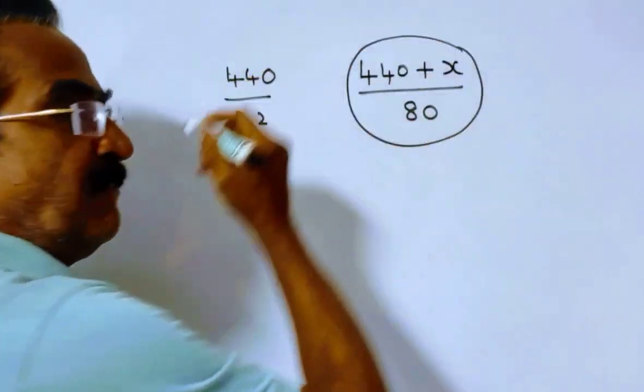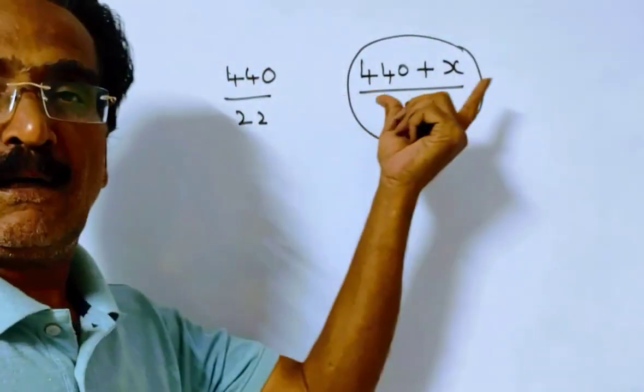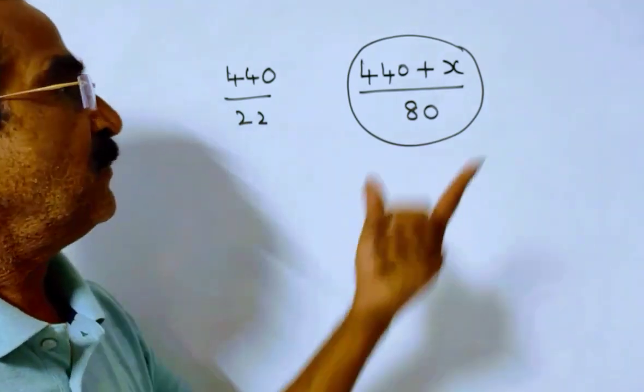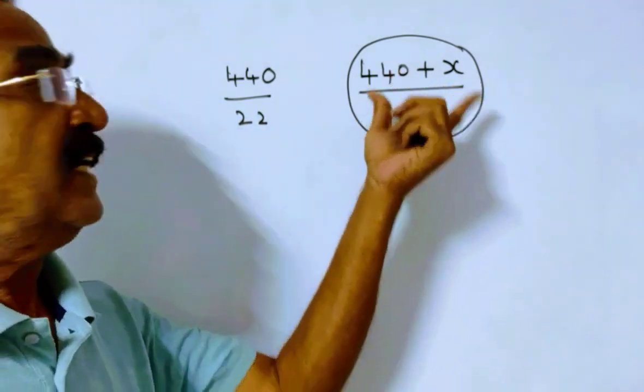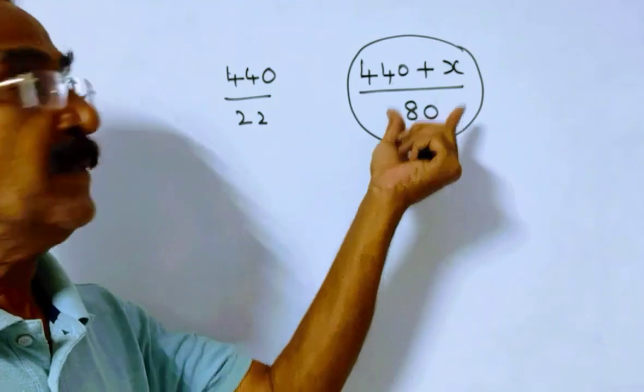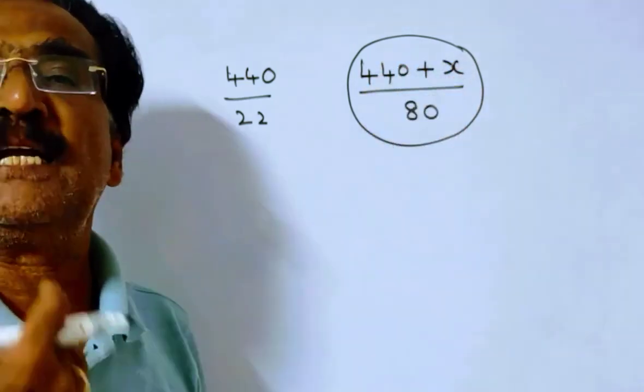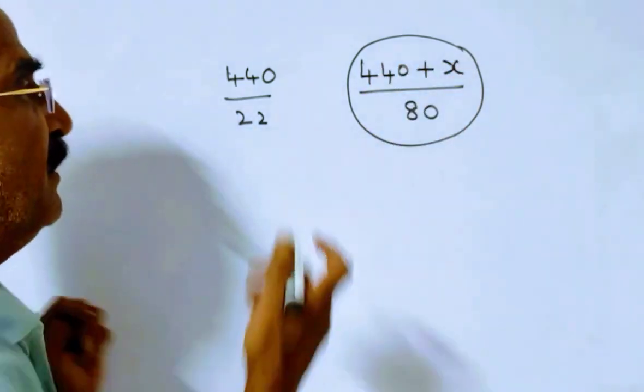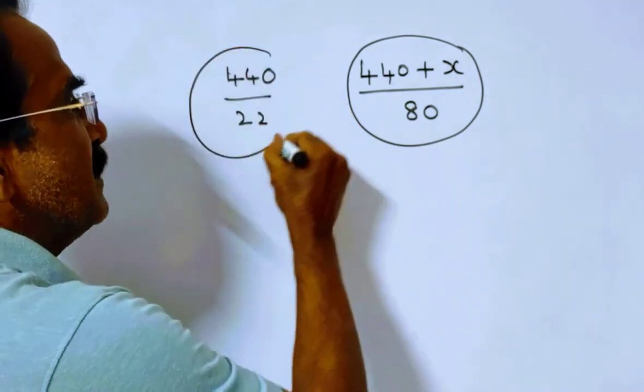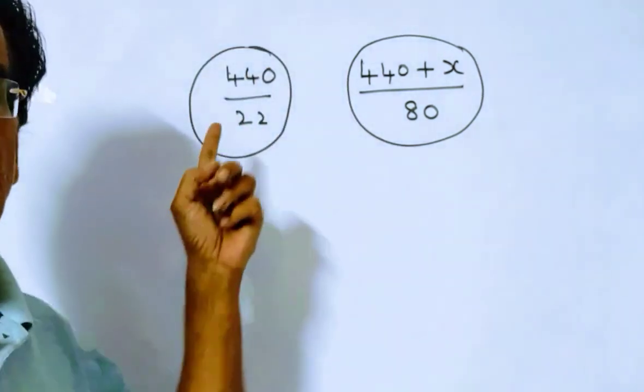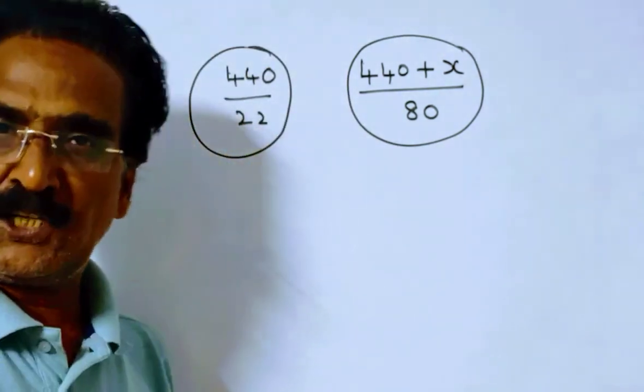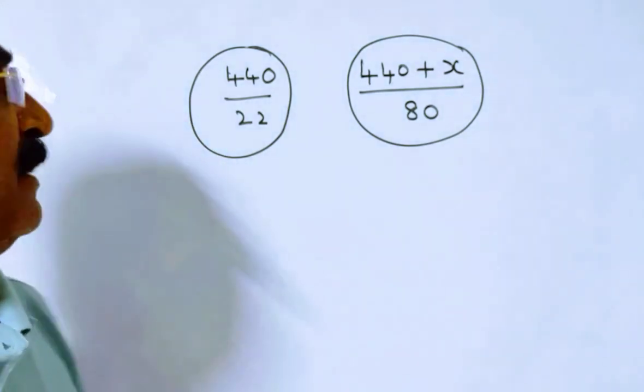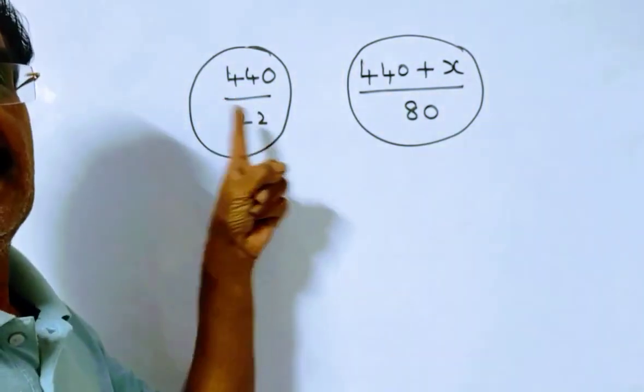This is the speed of the train while crossing the platform, distance by time. This is the speed of the train while crossing the platform. This is the speed of the train while crossing a pole.